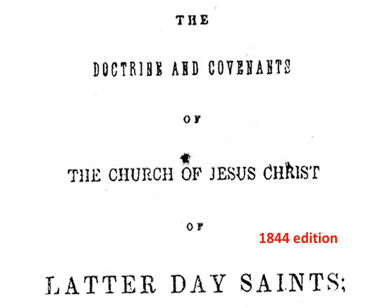The 1844 edition of the Doctrine and Covenants reflects the name change — about nine years from the first edition of 1835. It says 'the Doctrine and Covenants of the Church of Jesus Christ of Latter-day Saints.' So again, in the church's own scripture, we have the new name putting Christ back in the church, and this is still the current name today.